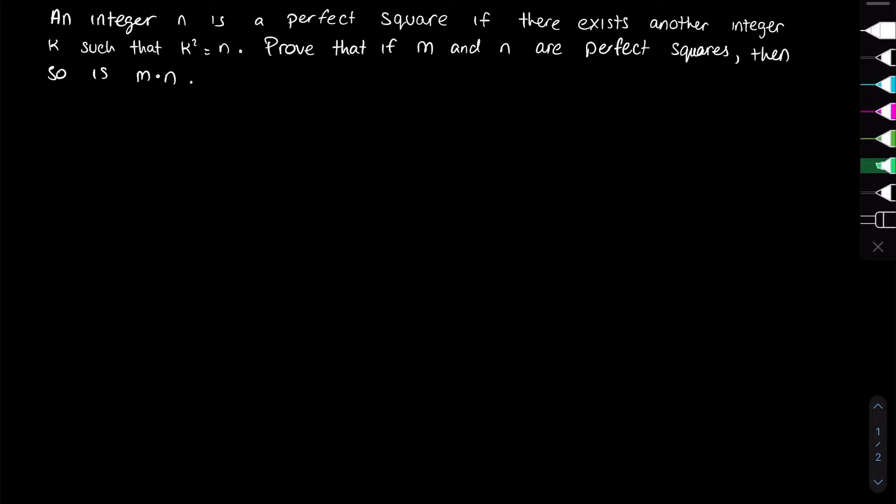Let's try to prove the statement. It starts with the definition of a perfect square: an integer n is a perfect square if there exists another integer k such that k² equals n. Prove that if m and n are perfect squares, then so is m times n.